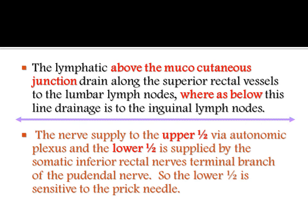Now, the lymphatics of the anal canal: lymphatics above the mucocutaneous junction drain along with the superior rectal vessels to the lumbar lymph nodes, whereas below this line drainage goes to the inguinal lymph nodes. The nerve supply to the upper half is through the autonomic plexus.